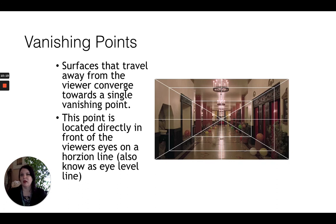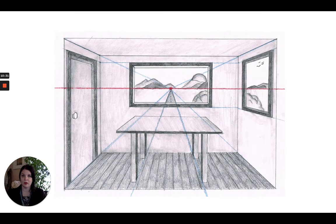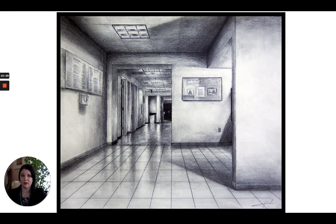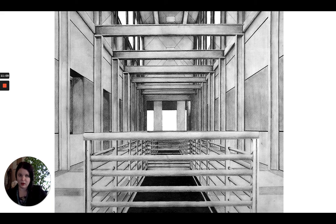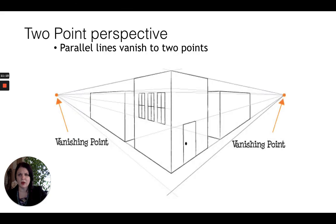We have surfaces that travel away from the viewer and converge towards a single vanishing point, like in one point perspective. We also have multiple vanishing points in two point and three point perspective. Here's a student drawing illustrating this — converging lines picking out aspects of the room are shown in blue, and the horizon line and vanishing point are shown in red. For one point perspective, looking down a hall gives a great illustration — here's another one point perspective example from upstairs at my graduate school.